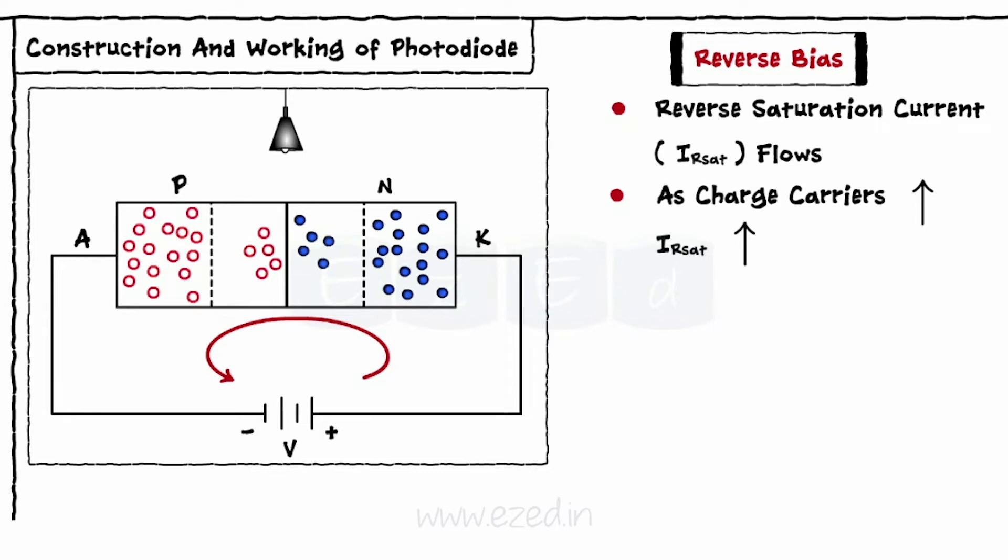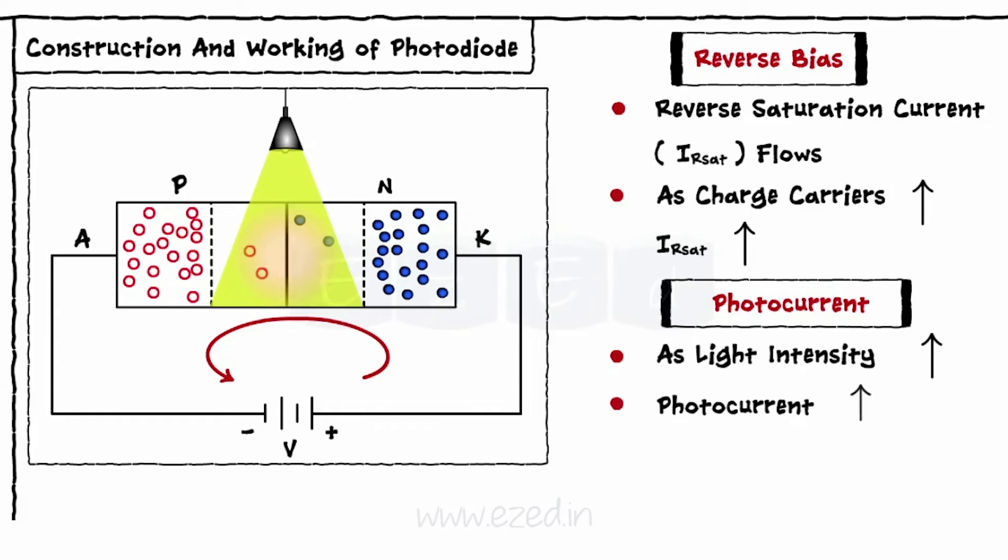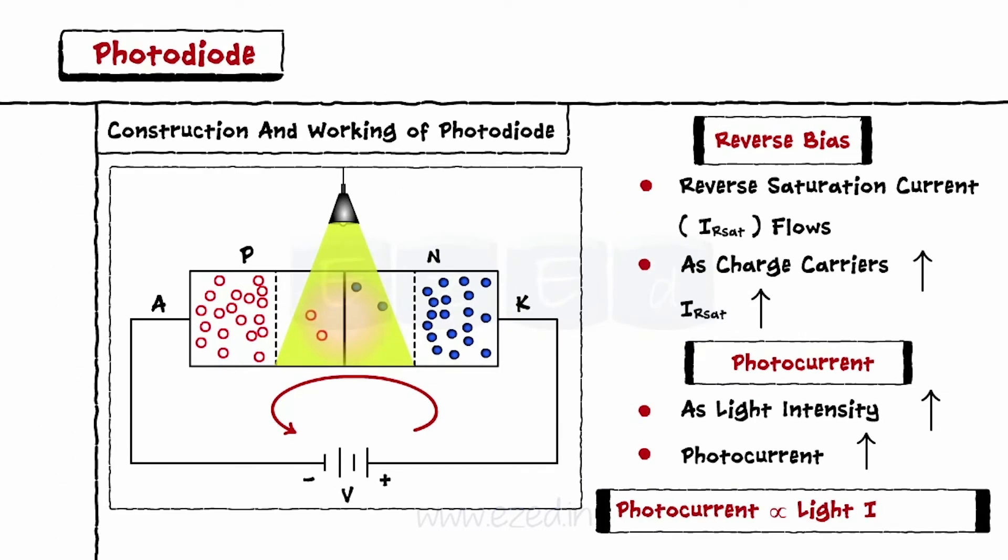This current is called as a photocurrent. With increase in the light intensity, more electron-hole pairs are generated and the photocurrent increases. Thus, photocurrent is proportional to light intensity.